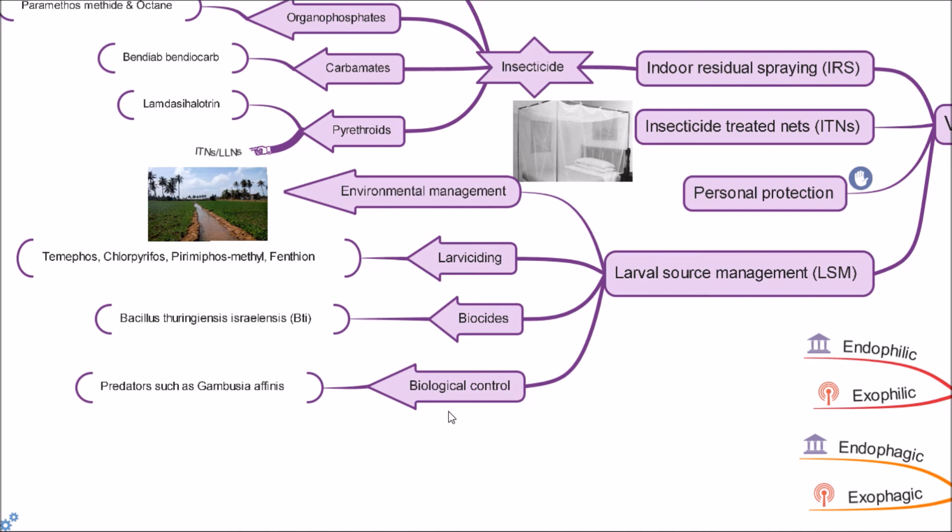Last one is using biological control that kills larval mosquitoes, but they are not efficient for mosquito control and are not widely used. For example, using predators such as mosquito fish, Gambusia affinis.